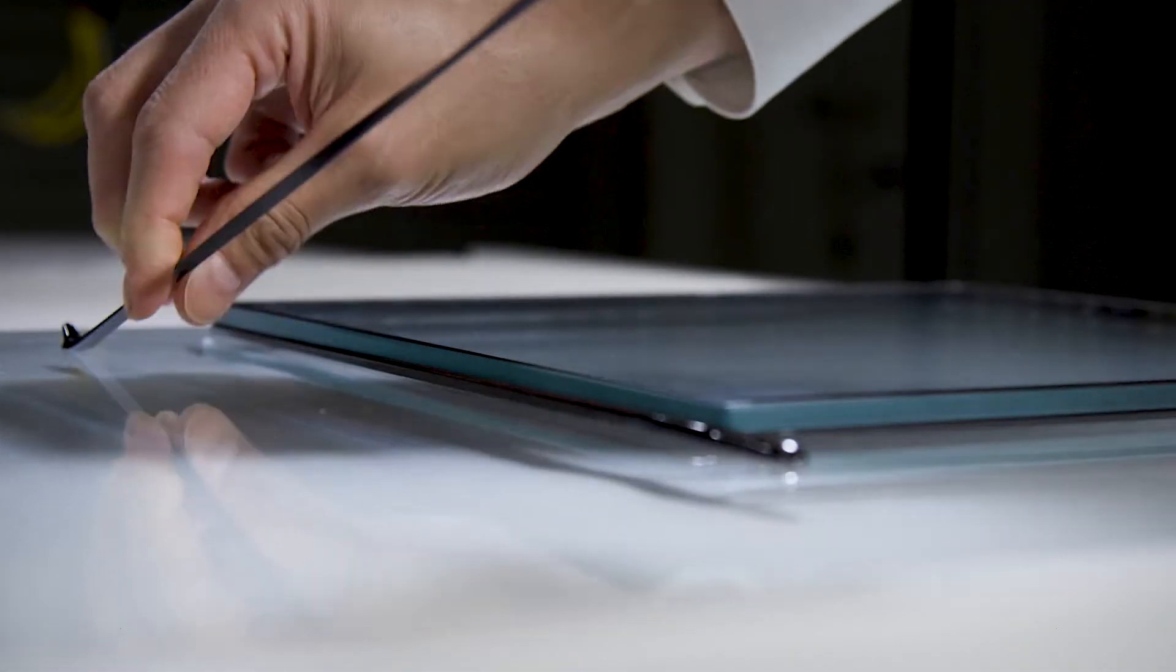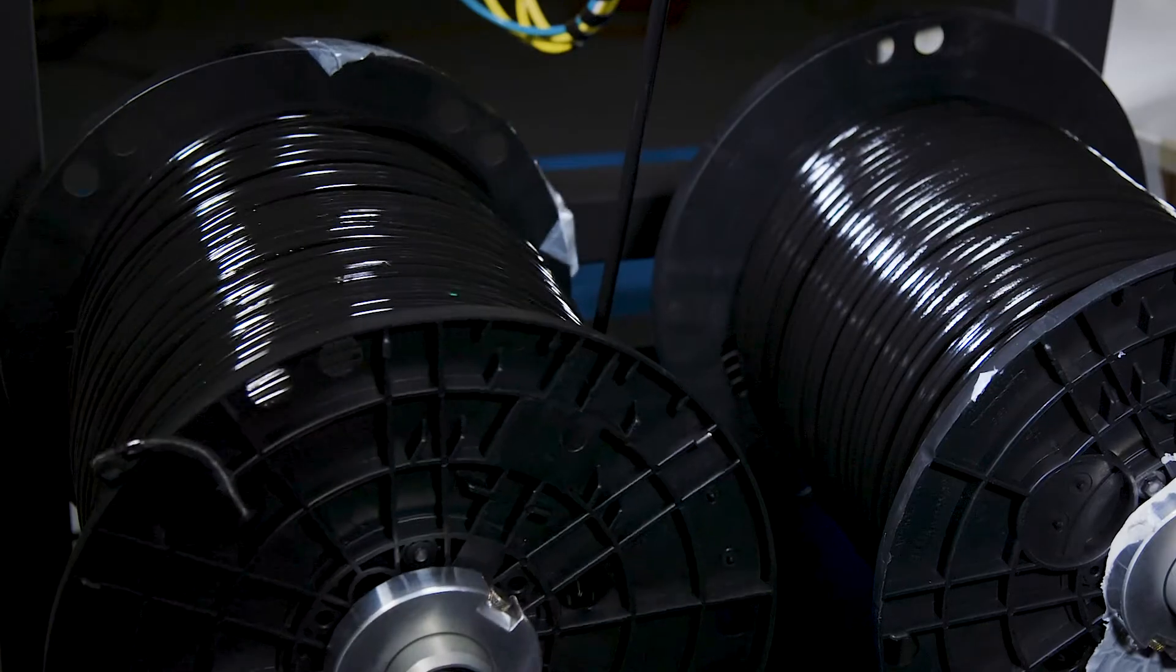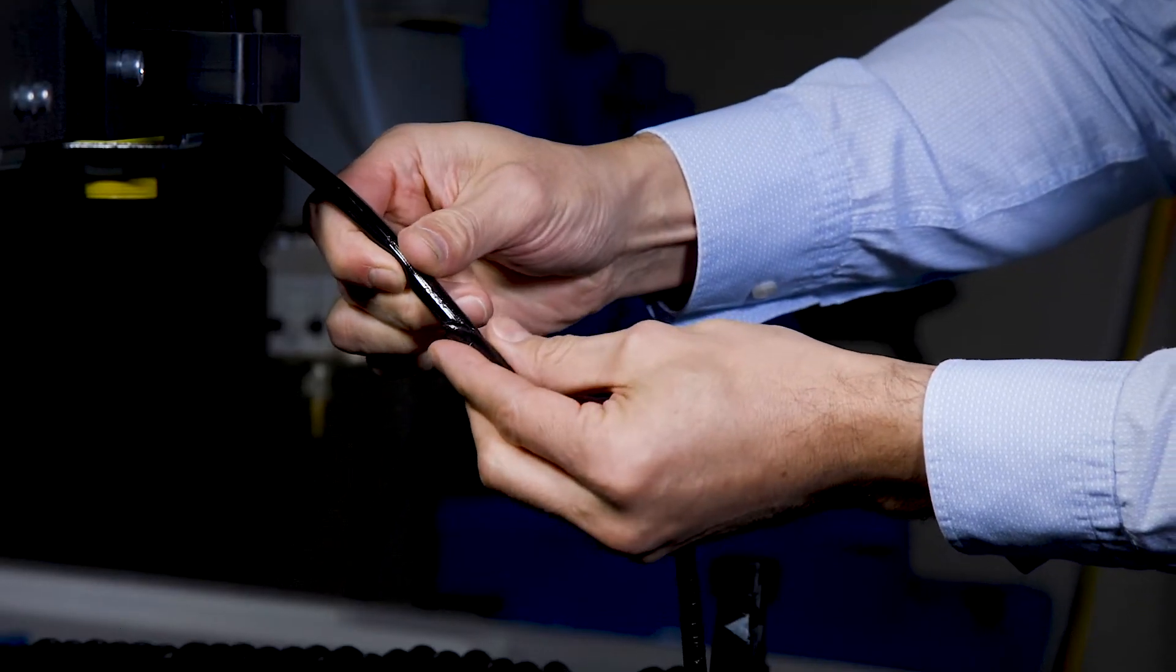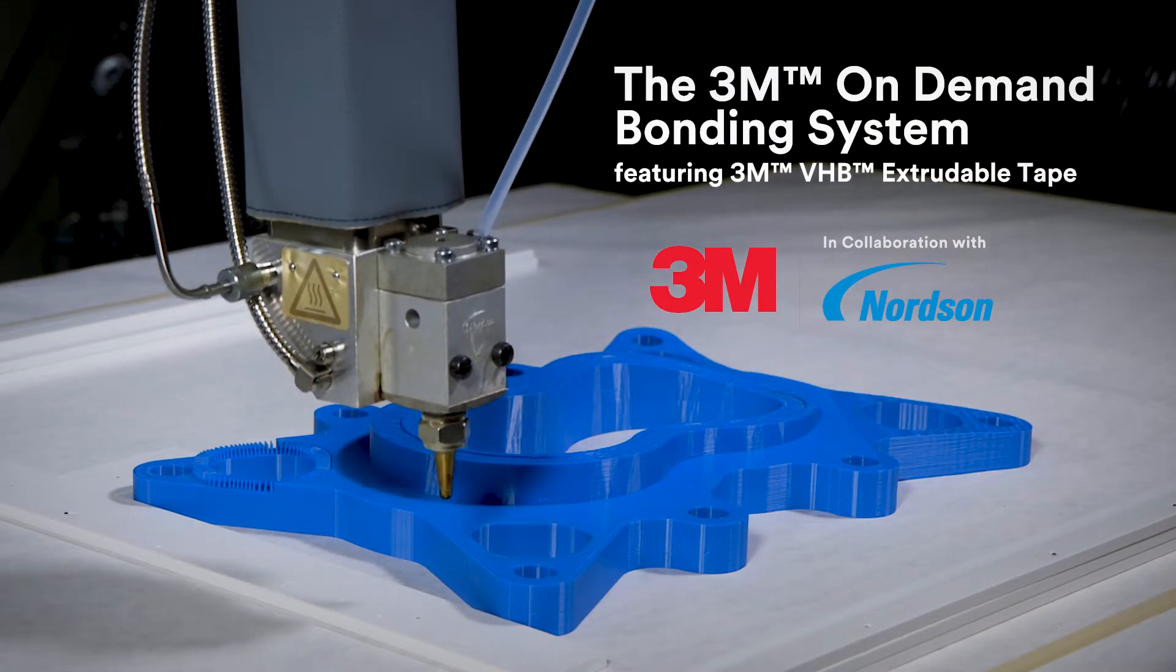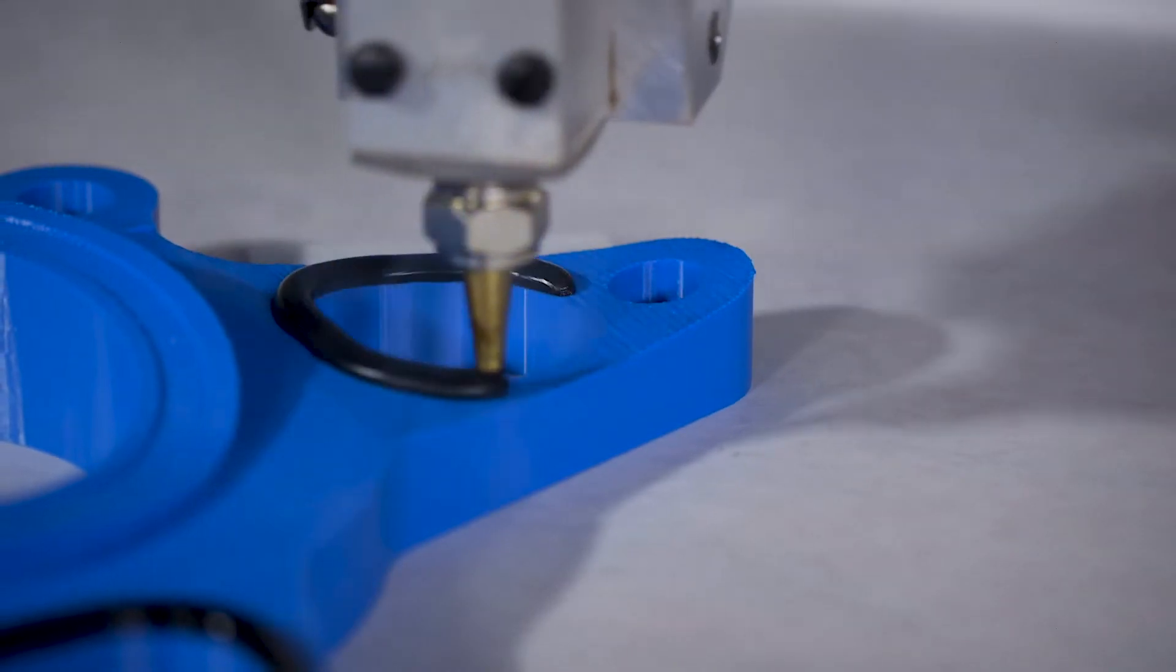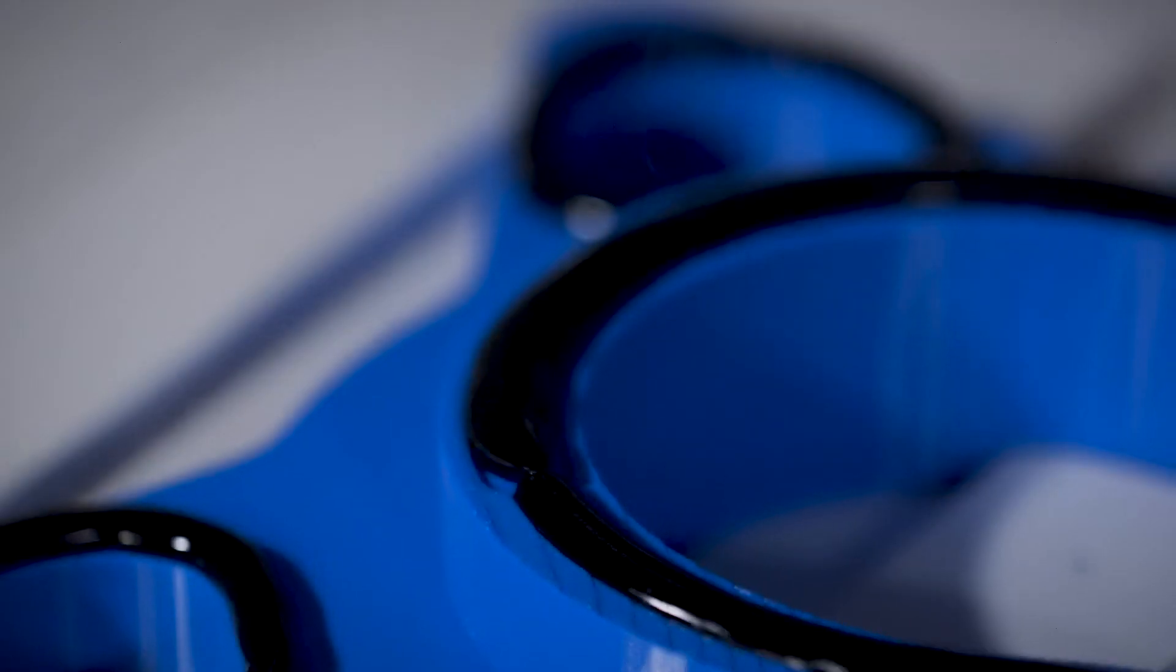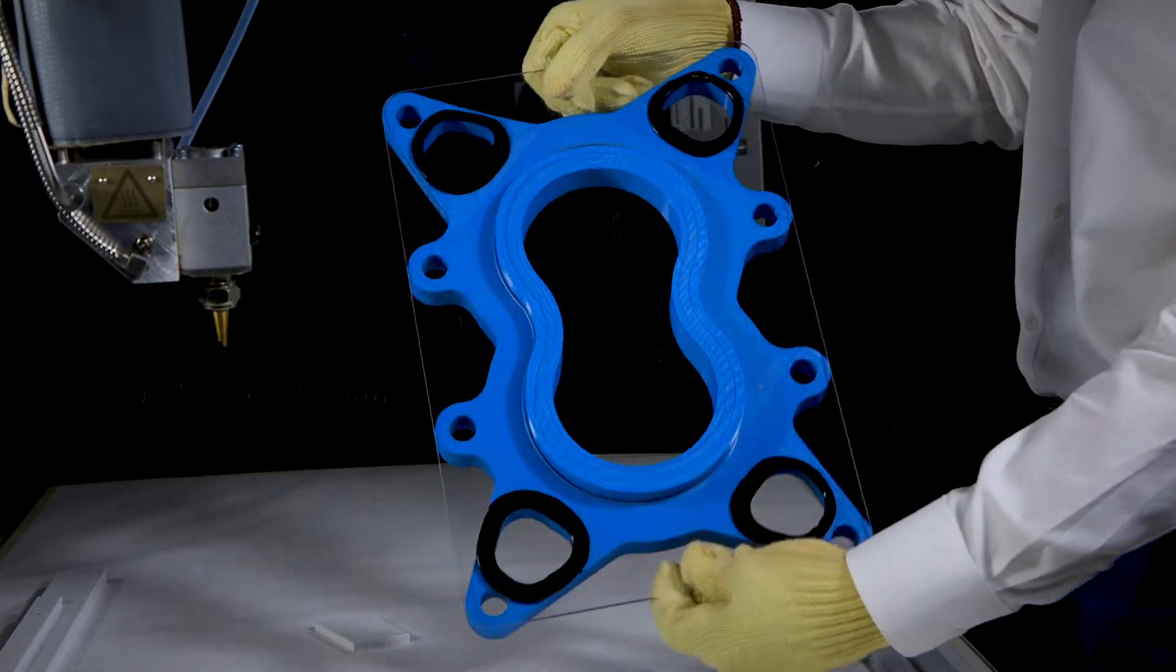The system is engineered to help reduce downtime and residual waste with less need to purge or change disposable components. The 3M On-Demand Bonding System featuring 3M VHB Extrudable Tape results in superior aesthetics with a smoother, cleaner appearance that fasteners can't match, all while maintaining excellent adhesion performance.